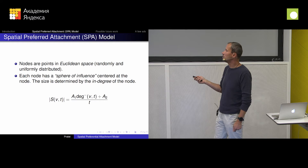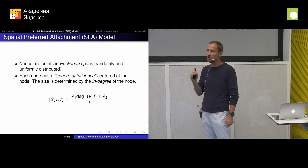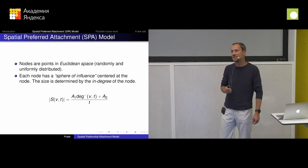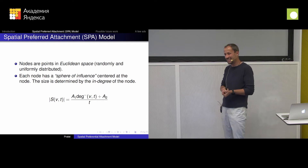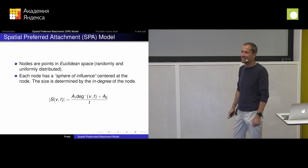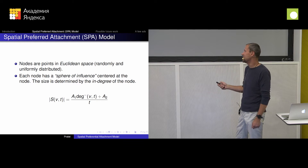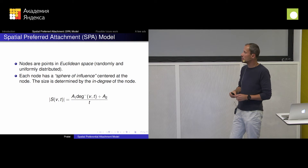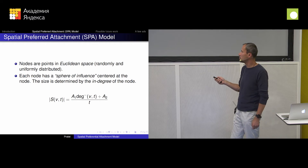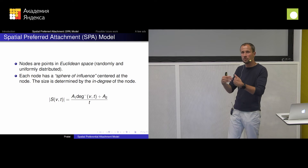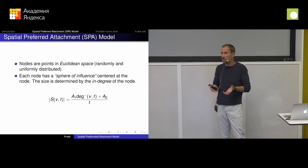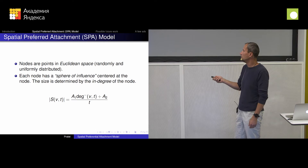It doesn't make perfect sense that they're randomly and uniformly distributed, because more people work in, say, computer science than in some obscure field. But we fixed that — we can make the model have a non-uniform distribution. For now, let's say papers appear in random places. And of course, the more papers that cite your paper, the more famous your paper is — it has a larger sphere of influence. So it makes sense to have it like that.